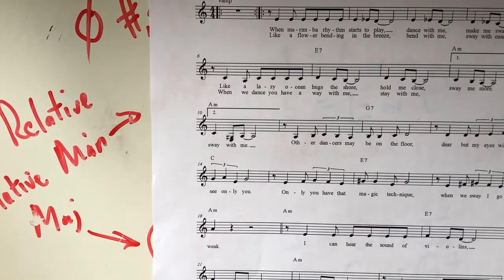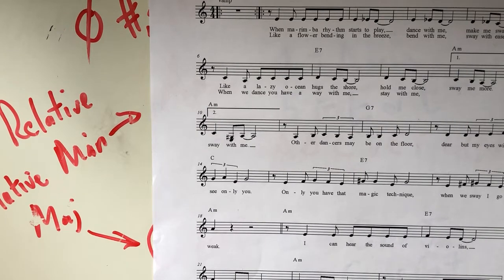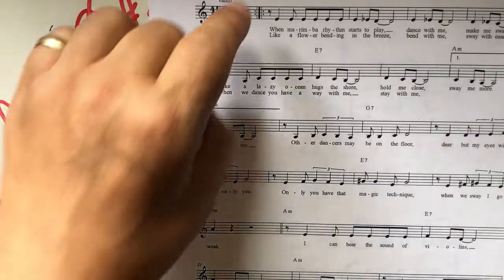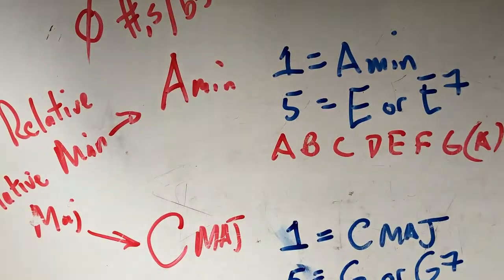This last verse is just like the first verse again. One chord at the beginning: 'I can hear the sound of violins long before' — back to the one chord — 'it begins.' 'Make me thrill as only you know how' — five chord — 'sway me smooth' — one chord — 'sway me now.' How do you write your own songs? Sometimes music just comes to you, but you're tapping into models that you know work. One chords and five chords is the place to start.